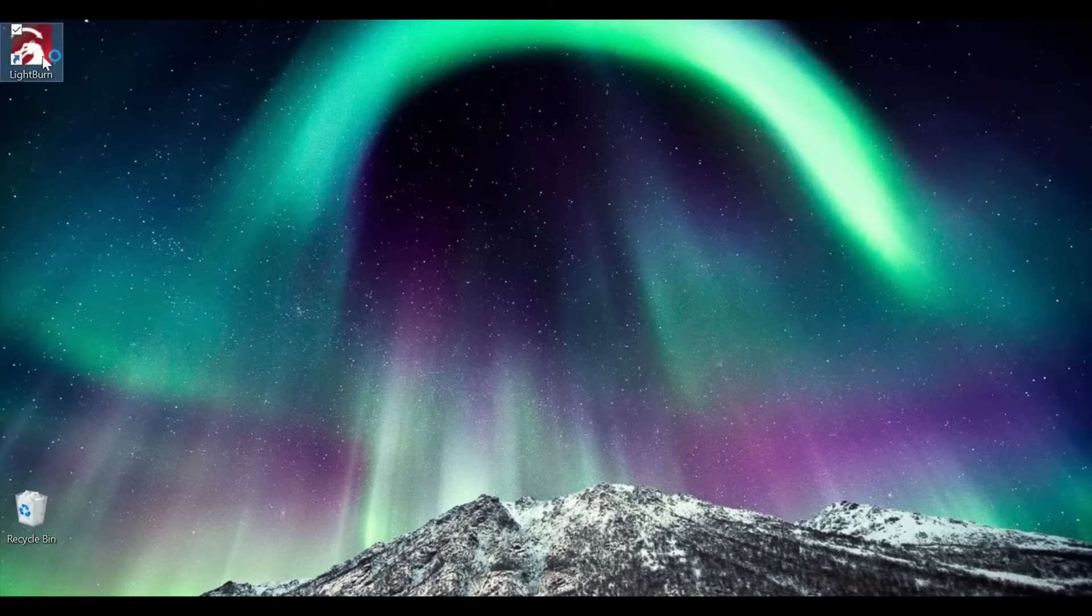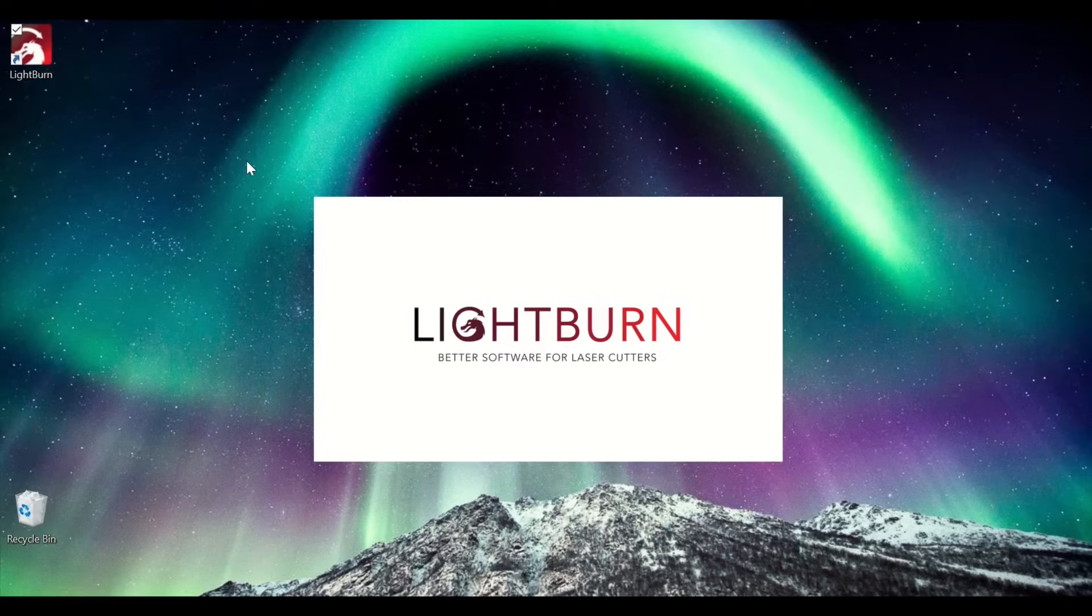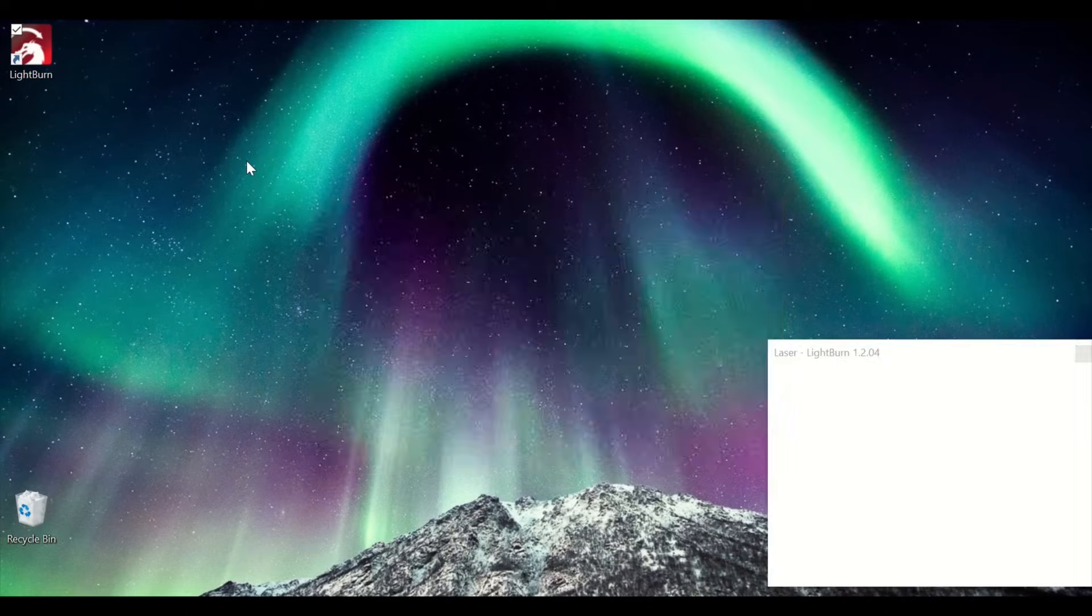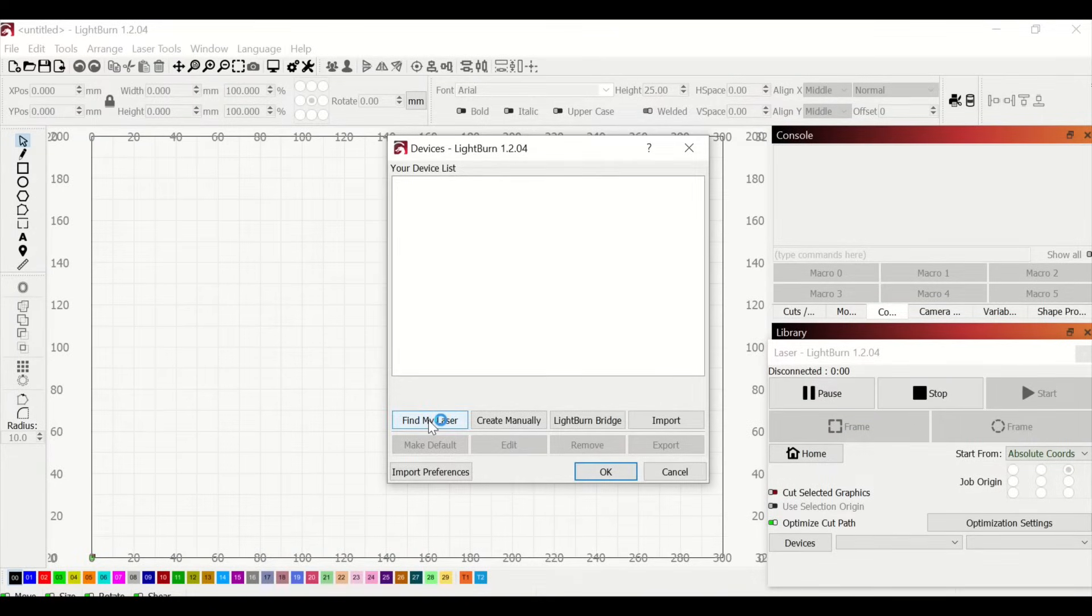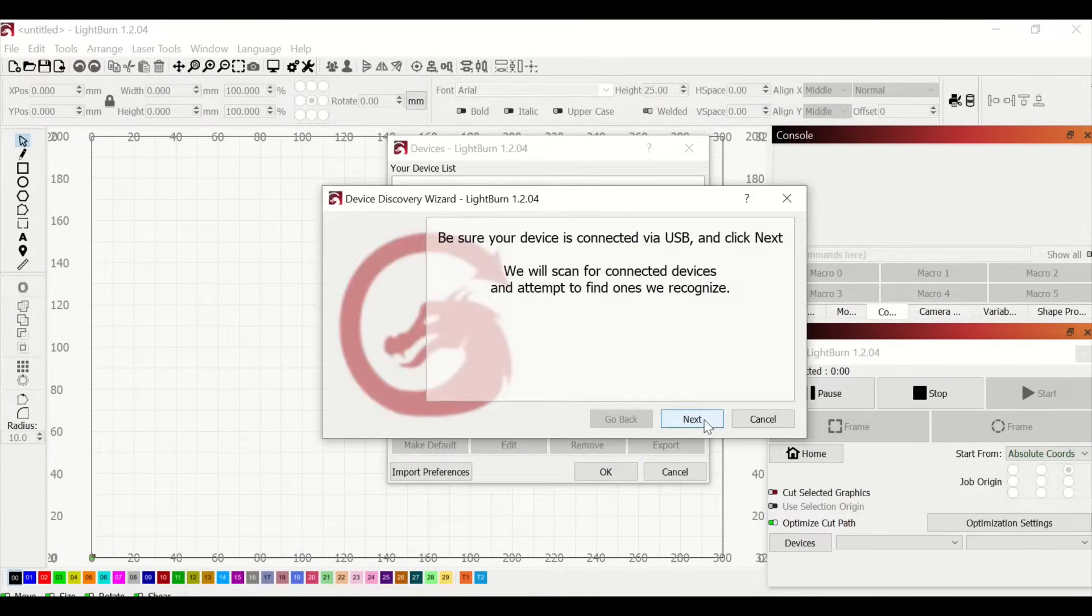The SD card comes with two different kinds of software to operate the laser. One is Laser GRBL which is a free program but in my opinion a little light on features. The other program is Lightburn which has a high level of functionality and is free for use for the first 30 days. After that a license is only $30. Lightburn can also be ran on both PC and Mac.